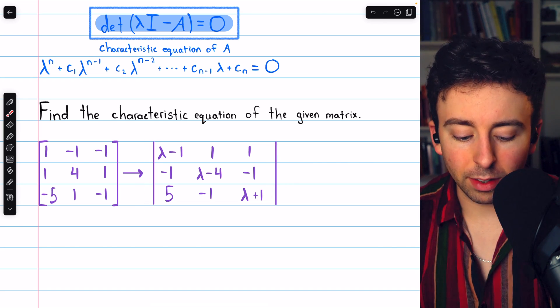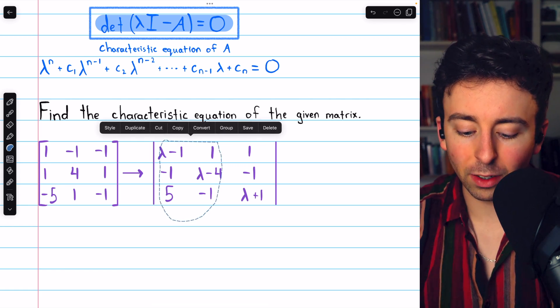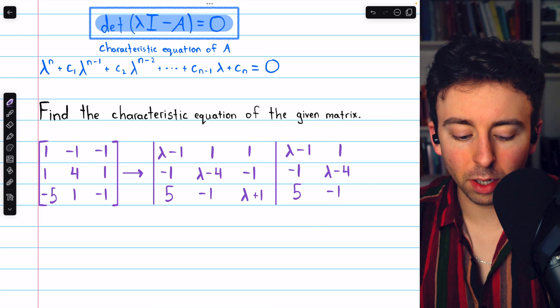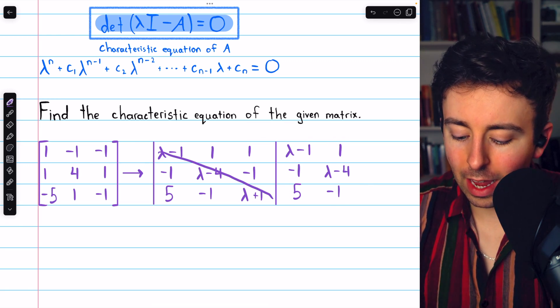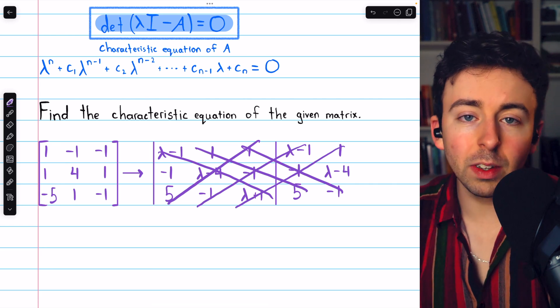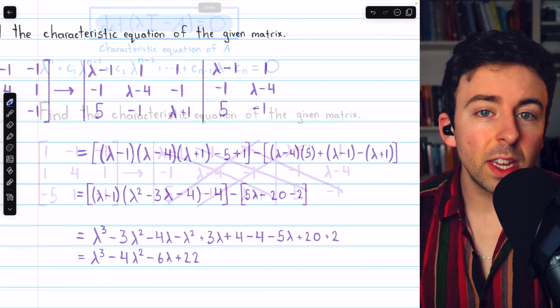Now, to take the determinant of this 3x3 matrix, it's probably easiest to use the diagonal trick. So we rewrite the first two columns to the right of this matrix, and then we can use diagonals to calculate the determinant. I'll leave a link in the description to my lesson going over this trick if you need to review.